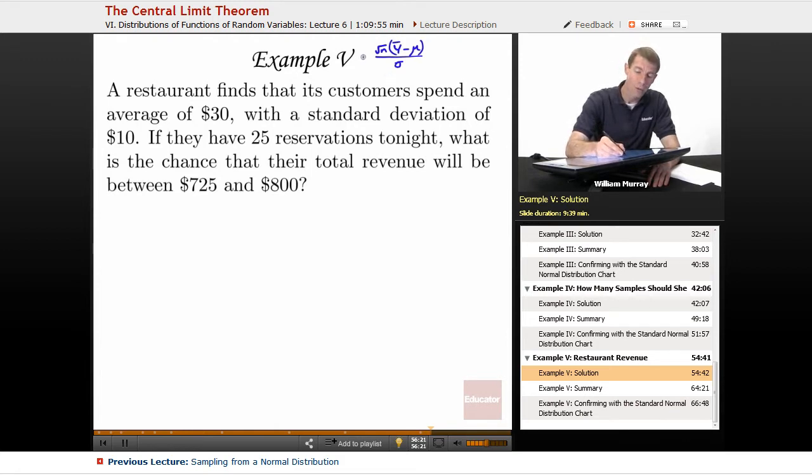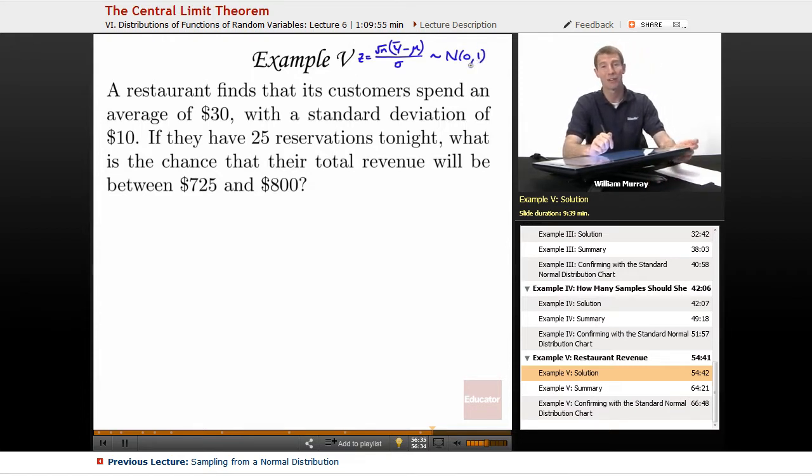The point of that was that would give you a standard normal variable. We're going to call it Z, and that's a standard normal variable. And in turn, the point of a standard normal variable is that it's very easy to calculate probabilities. The way I'm doing it is I'm using charts. You might use charts for your class, or you might have more sophisticated electronic tools.